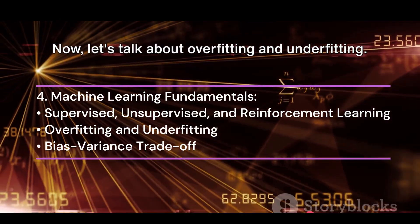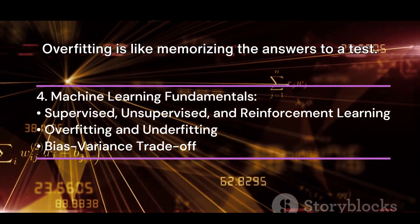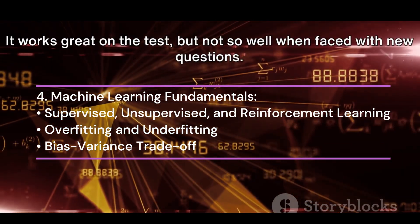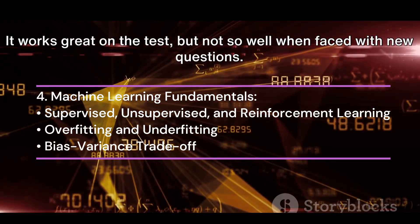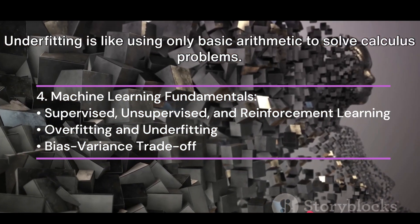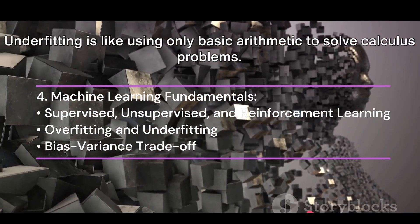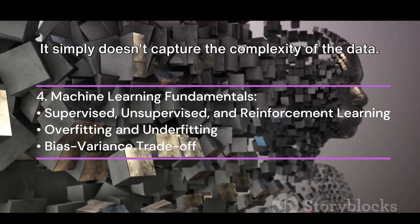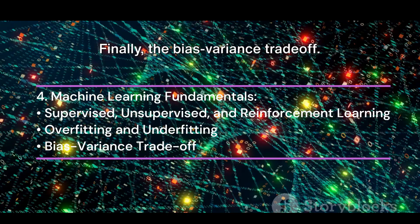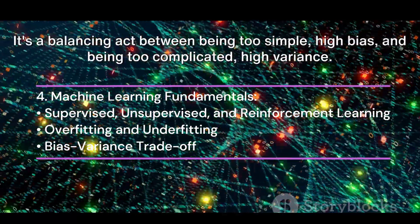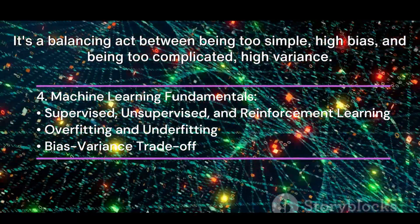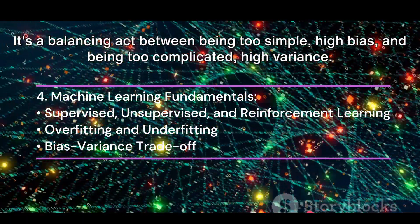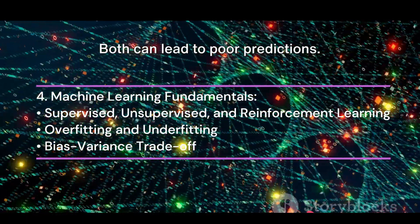Now, let's talk about overfitting and underfitting. Overfitting is like memorizing the answers to a test — it works great on the test, but not so well when faced with new questions. Underfitting is like using only basic arithmetic to solve calculus problems; it simply doesn't capture the complexity of the data. Finally, the bias-variance trade-off is a balancing act between being too simple (high bias) and being too complicated (high variance). Both can lead to poor predictions.